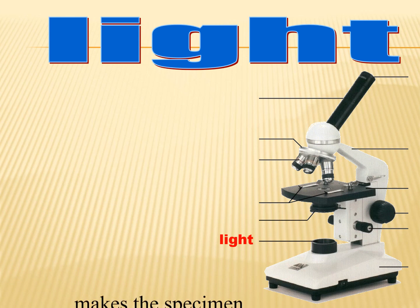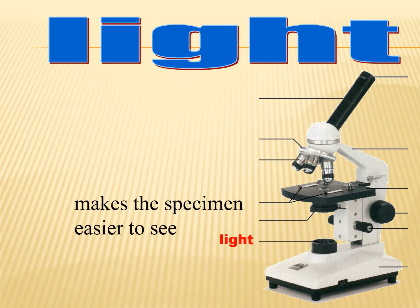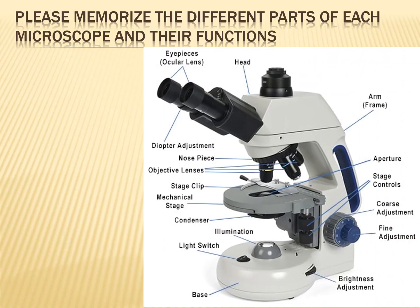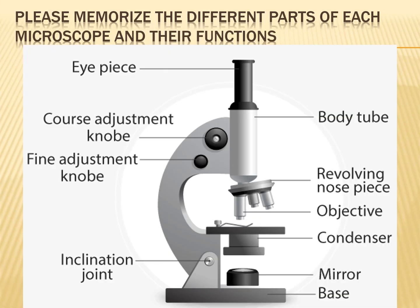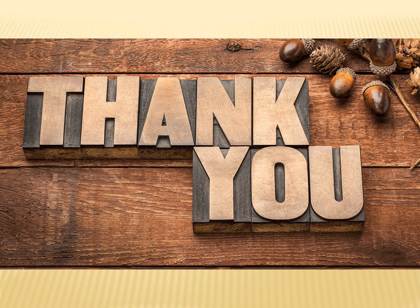The diaphragm's function depends on the transparency of the specimen, the degree of contrast desired, and the particular objective lens in use. Light makes the specimen easier to see. Those are all the parts and functions of the microscope. Please memorize the different parts of the microscope and their functions, and don't forget to copy this in your notebook. Thank you very much and God bless.